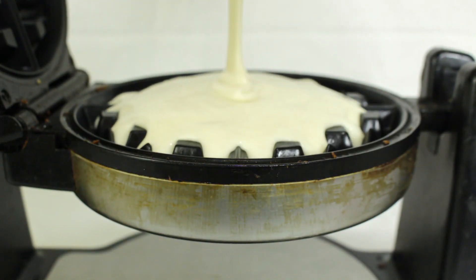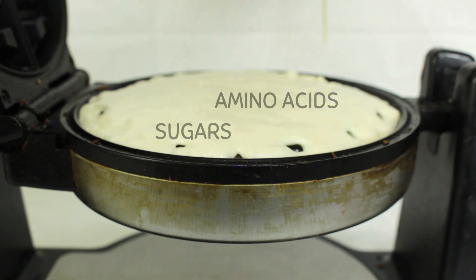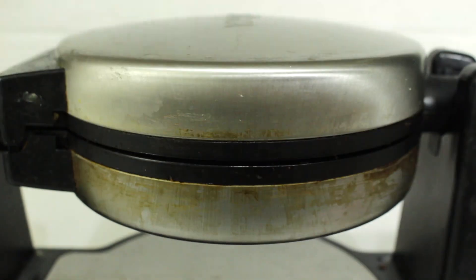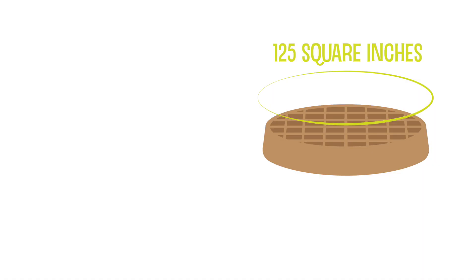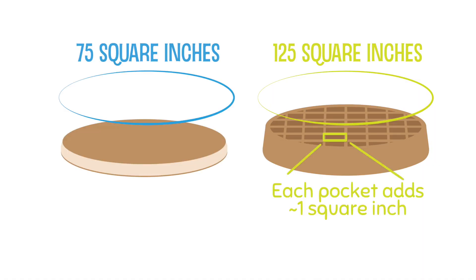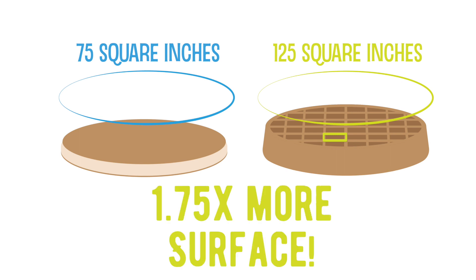To make waffles, a hot surface is smooshed up against all the sugars and amino acids in the batter to make as many Maillard reactions as possible. Waffle makers are designed to increase the amount of surface area on waffles on average by almost twice as much compared to pancakes.